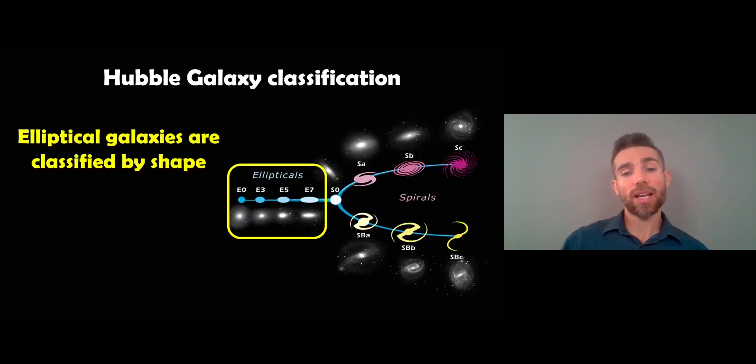The elliptical galaxies sit on the left hand side of this classification tuning fork and they're mostly classified by their shape. Depending on what shape they are, they'll have some number associated with them. The differences between the spirals and ellipticals is that the ellipticals are elliptical in shape, they're more kind of spherical, whereas a spiral galaxy is flat, it's more disc-like, it rotates in a common direction.